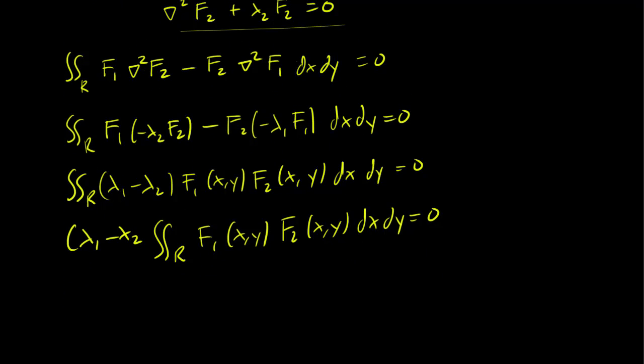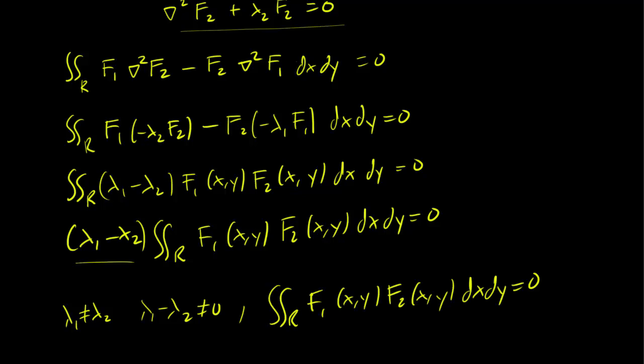Since lambda1 is not equal to lambda2, lambda1 minus lambda2 is non-zero, which implies that the integral must be 0. In other words, eigenfunctions corresponding to different eigenvalues are going to be orthogonal.